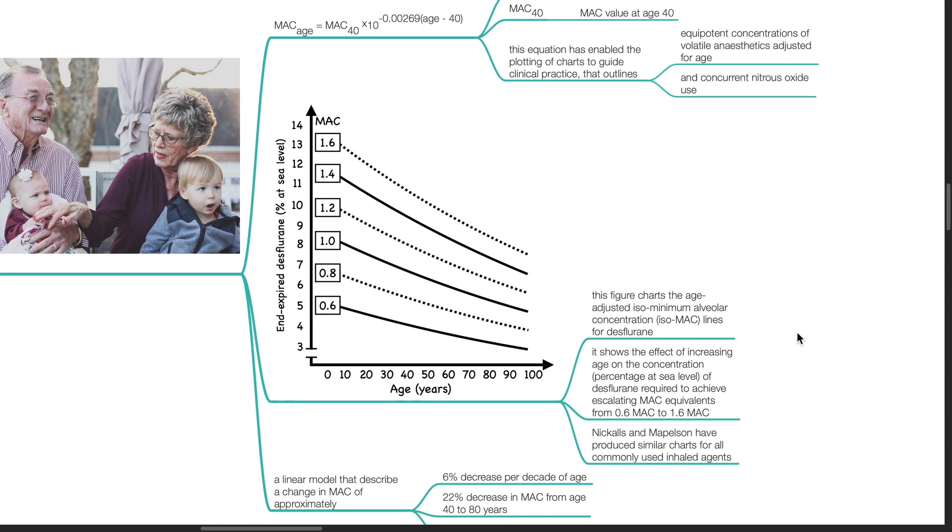This figure charts the age-adjusted isominimum alveolar concentration lines for desflurane. It shows the effect of increasing age on the concentration of desflurane required to achieve escalating MAC equivalence from 0.6 MAC to 1.6 MAC.